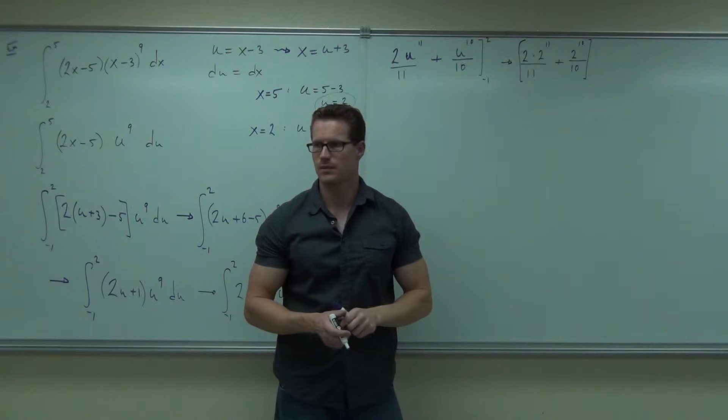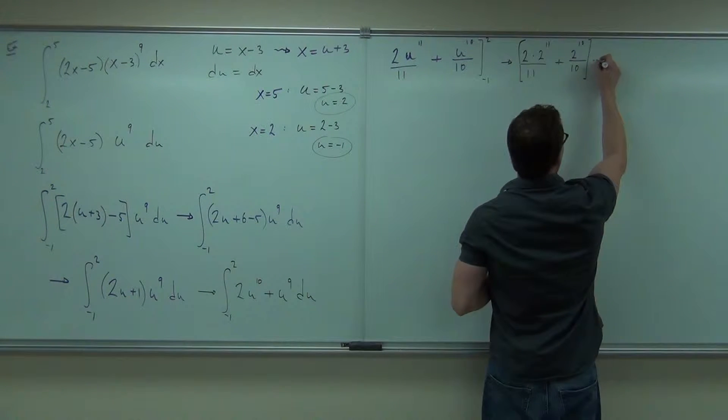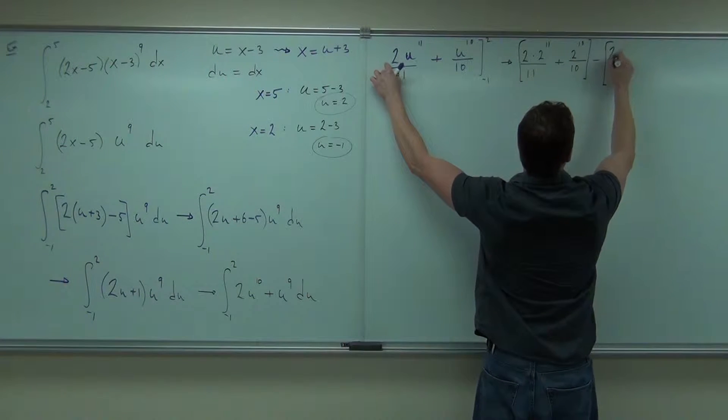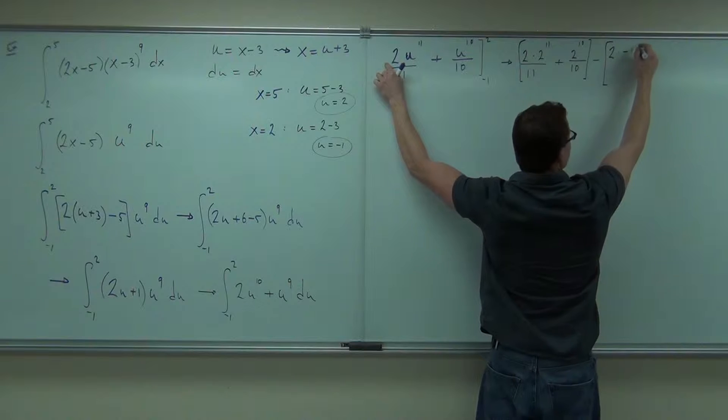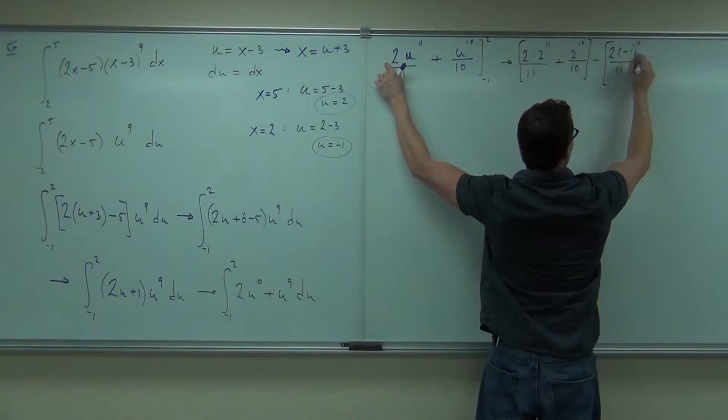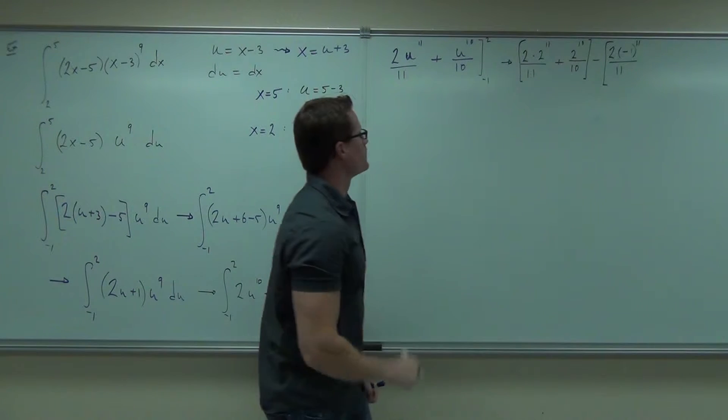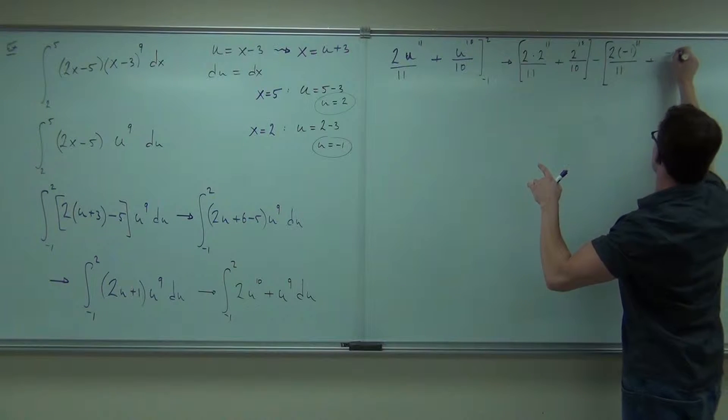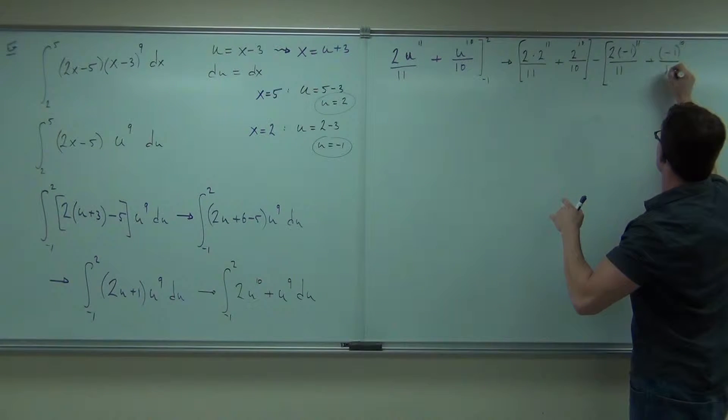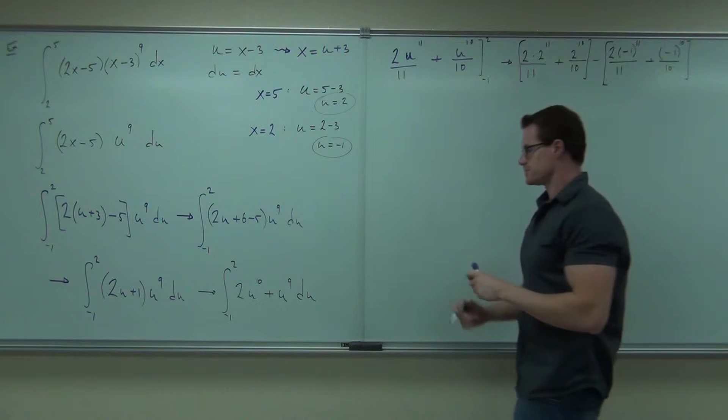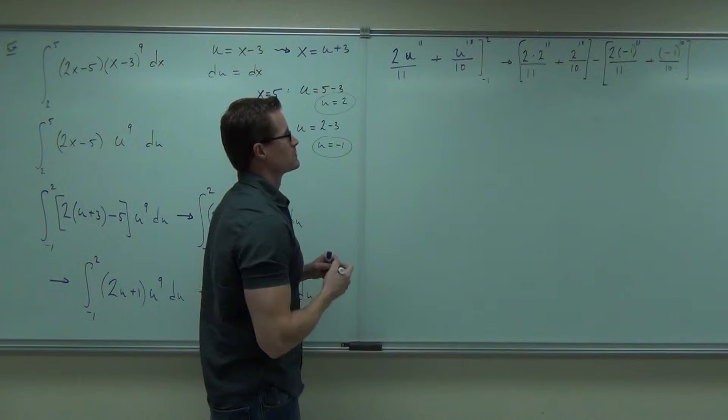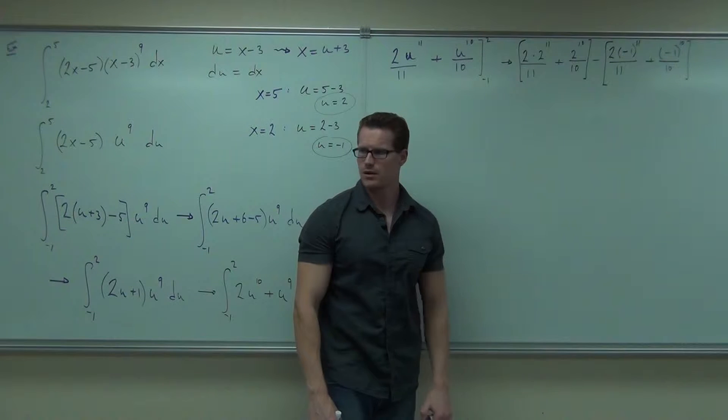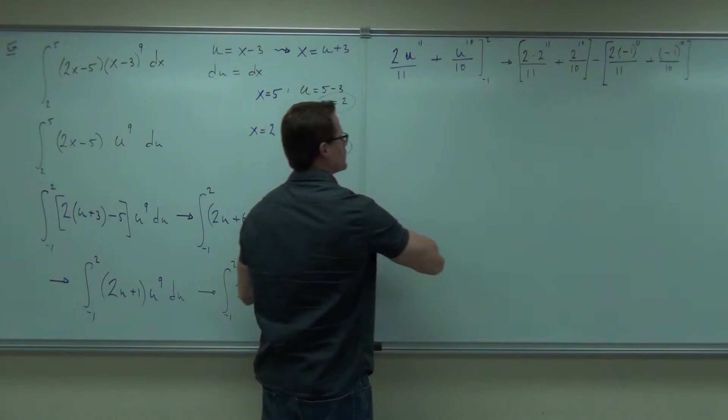Then what do we do? Subtract. All right, we've got to do that. And we'll plug in the negative 1. 2, negative 1 to the 11th over 11, plus negative 1 to the 10th over 10. Oh my, how much is 2 to the 12th? Because that's what that is. That's 2 to the 12th. 2,048? Okay, I'll believe you.